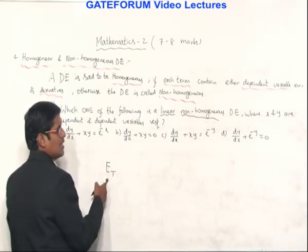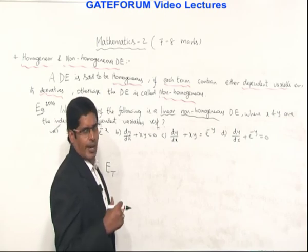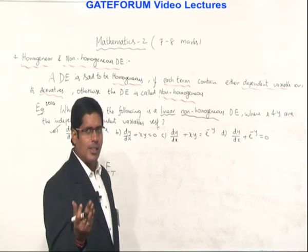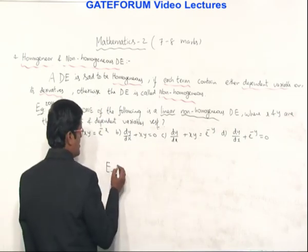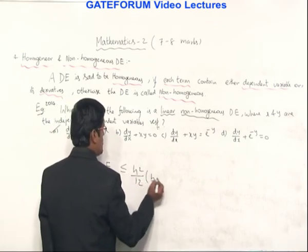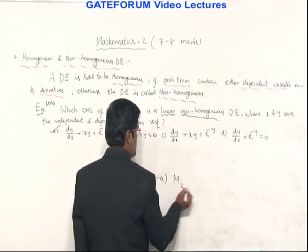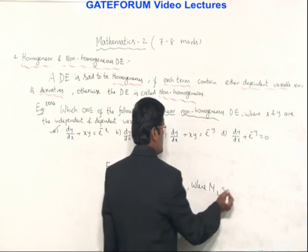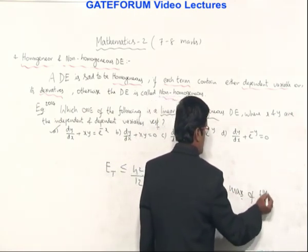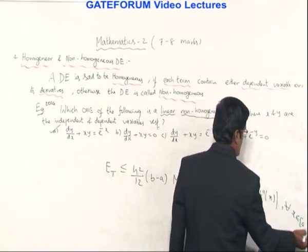The error in the Trapezoidal rule is considered when the polynomial is taken as a straight line, i.e., f(x) is treated as a linear polynomial. The error formula is: E_T ≤ (h² / 12) × (b − a) × M₂, where M₂ = max|f''(x)| for all x in the closed interval [a, b].